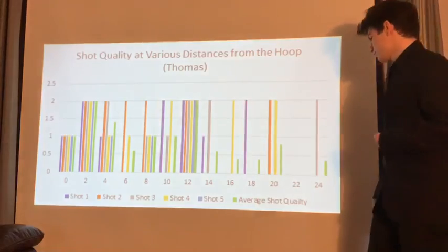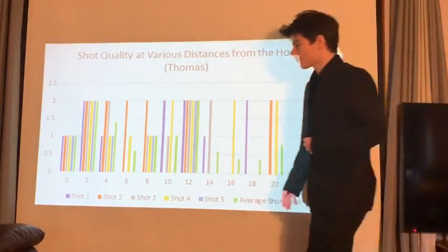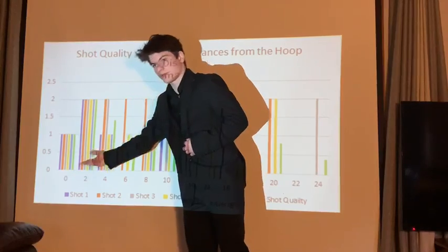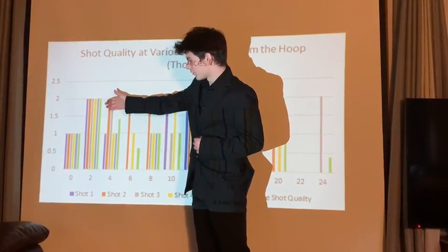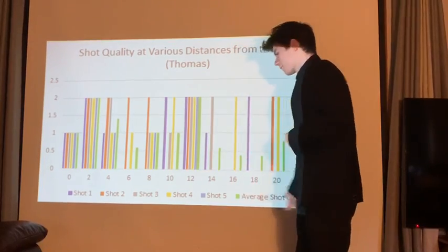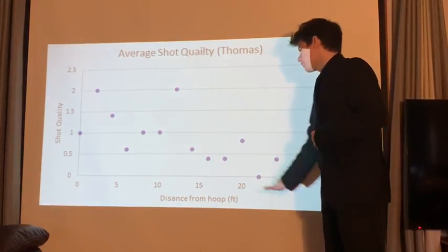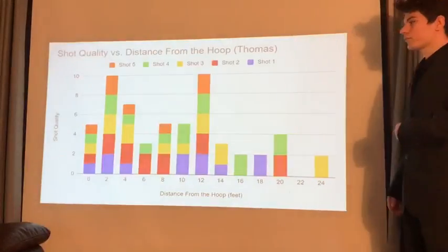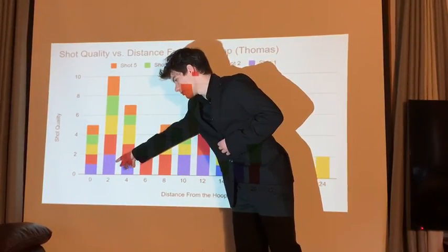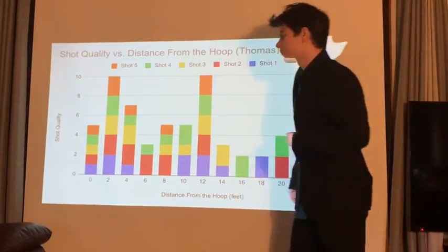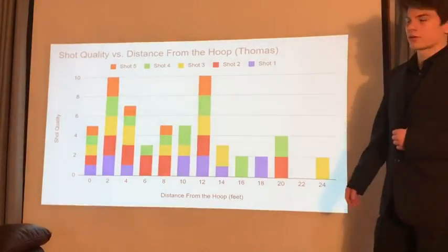This is my graph — same thing as the first bar graph. There were no bars in some places because I missed those shots. Distance zero only amounts to a one because those were all banks. Shot two amounts to a two because those were all swishes. This is my hybrid shot quality — as you can see, mine also goes down the further away I get from the hoop. The larger blue bar represents a swish and the smaller blue represents a bank, and missing colors mean I missed those shots.